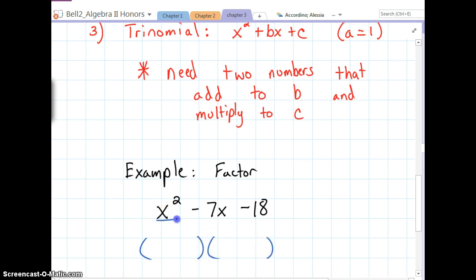And if it's an x squared sitting there, we know our first terms in each binomial has to be an x. And now we're coming up with two numbers that add to b, which is negative 7. And those same exact two numbers have to multiply to negative 18.